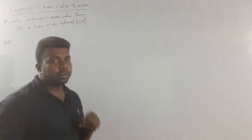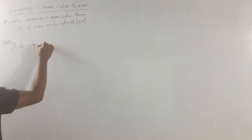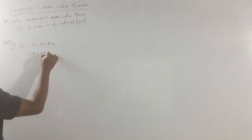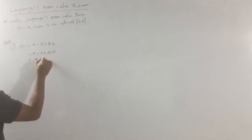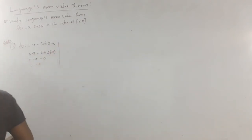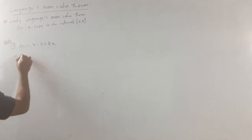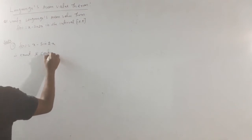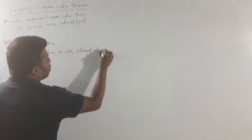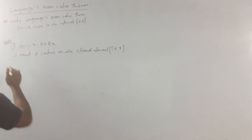In the first step, I am going to check the continuity. Step 1: f of x equals x minus sin 2x. Since x and sin 2x are both continuous functions, f of x is continuous on the closed interval minus pi to pi. Step 1 is complete.